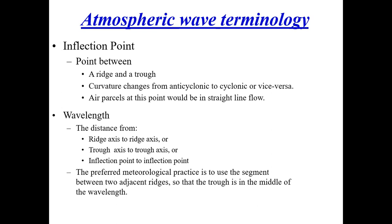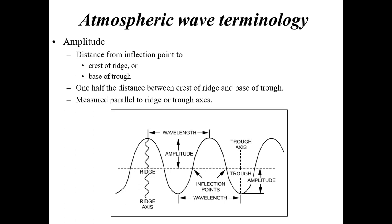The preferred meteorological practice is to use the segment between the two adjacent ridges so that the trough is in the middle of the wavelength — that's preferred to determine where the wavelength is. Amplitude is the distance from the inflection point to the crest of the ridge or the base of the trough. It is basically one half the distance between the crest of the ridge and the base of the trough, and it's measured parallel to the ridge or trough axes.